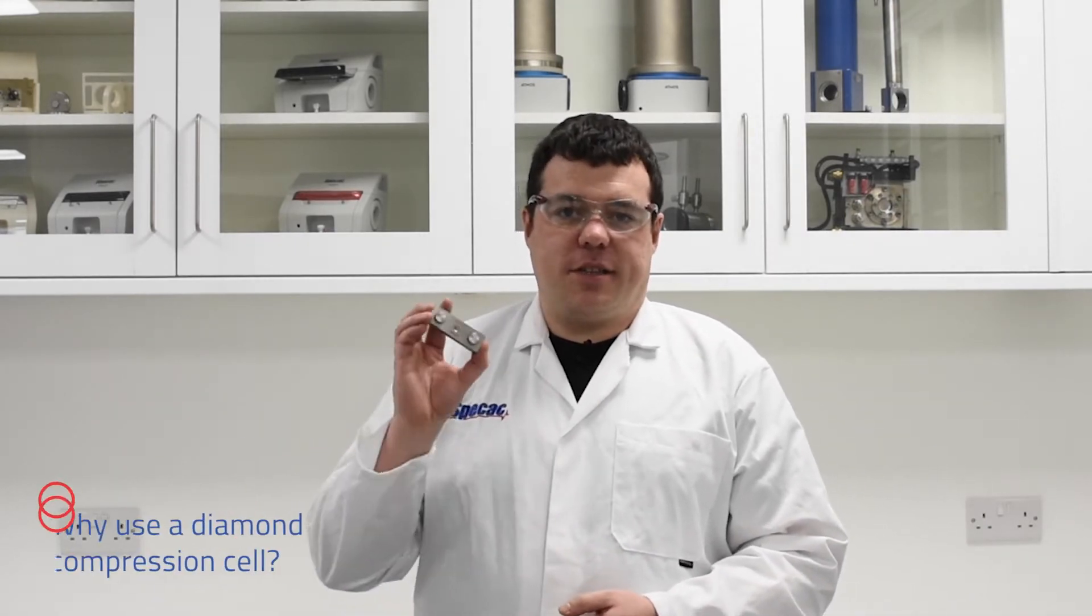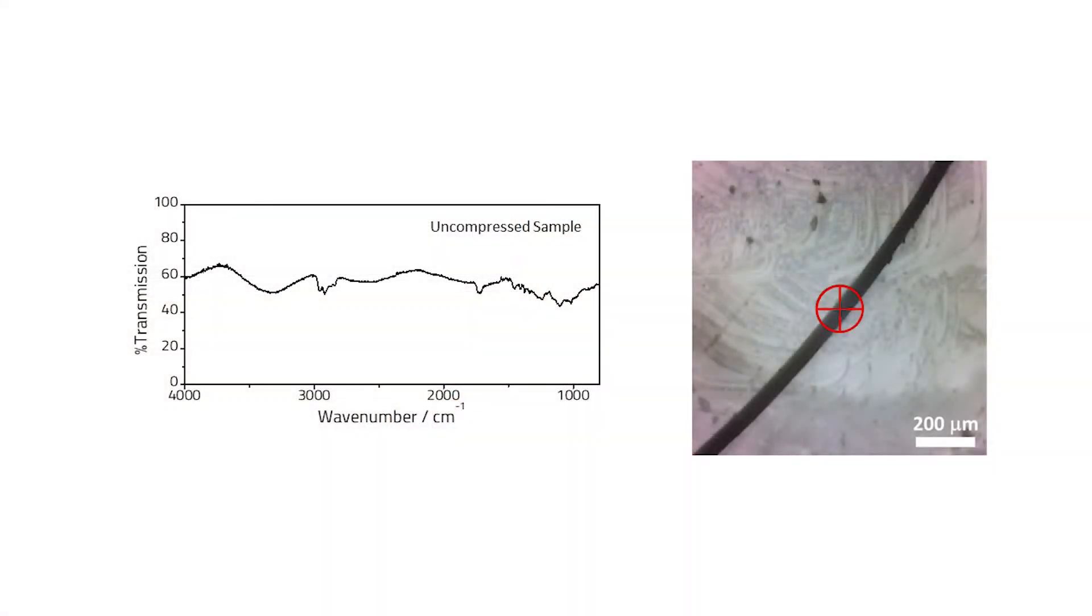Welcome to the Newton Demo Lab. Today we're going to be talking about the DC3, the diamond compression cell. So what is the DC3 and what problems does this solve in IR microscopy?